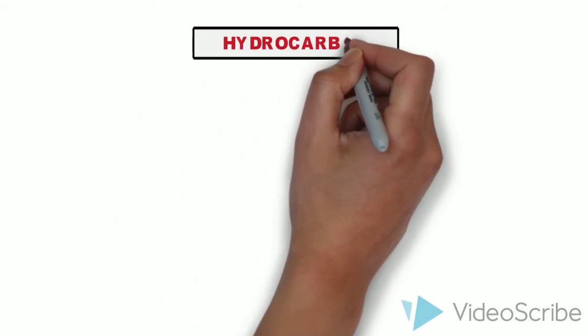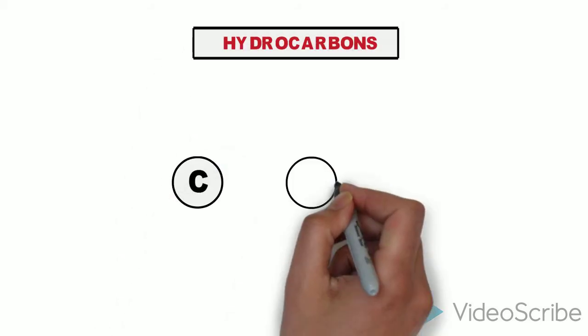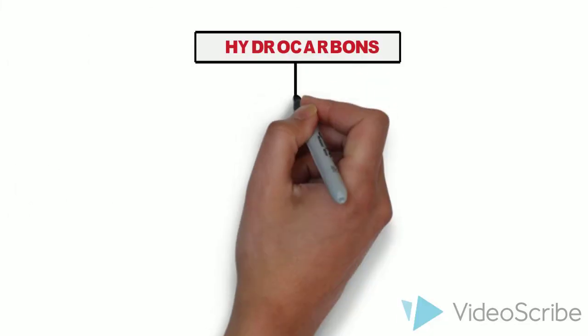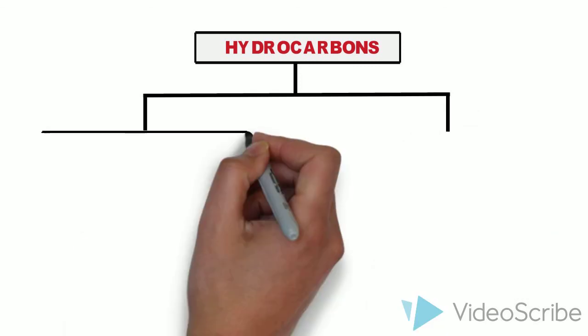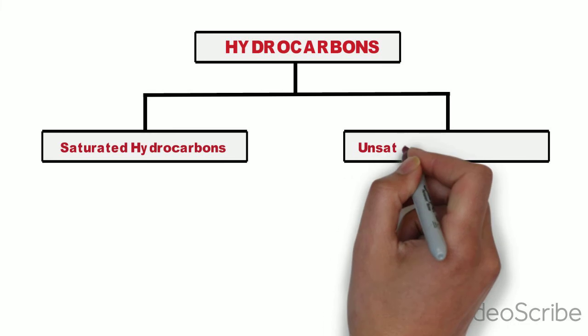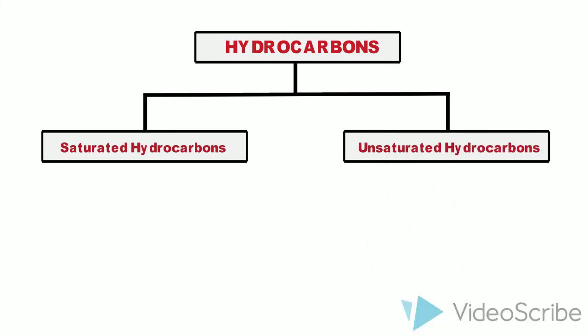Hydrocarbons are compounds formed from carbon and hydrogen. They are of two types, namely, saturated hydrocarbons and unsaturated hydrocarbons.